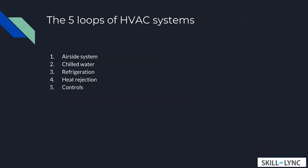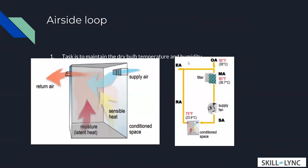The five subsystems are: air side system, chilled water system, refrigeration system, heat rejection, and control system. We're going to break down each of these systems step by step and talk about how these subsystems are optimized using computer simulations. First, let's look at the air system — also called the air side loop. This is probably the easiest to understand. In a small room, supply air comes in and return air goes back through a duct, forming the air loop.